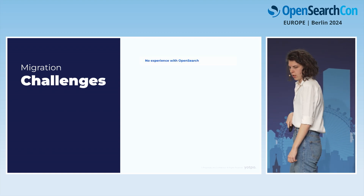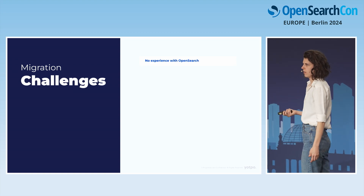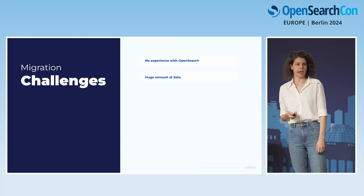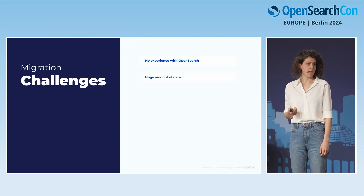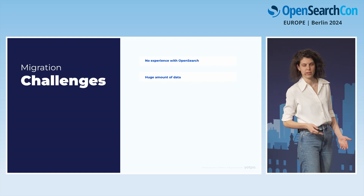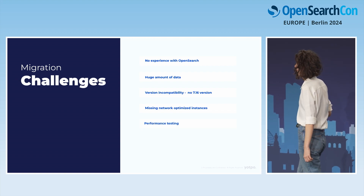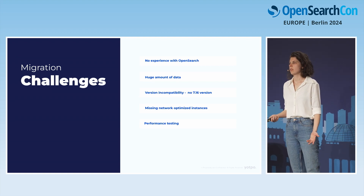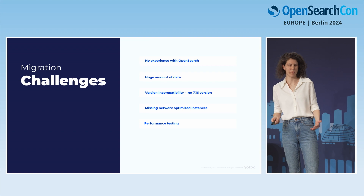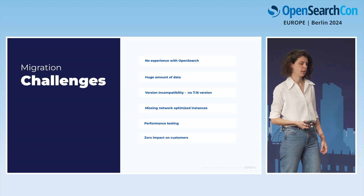Our challenges were: we weren't familiar with OpenSearch and had no experience with it. We had a huge amount of data — 50 terabytes. We had version incompatibility: OpenSearch is forked from 7.10 and we were running 7.16, so we had no direct version to move to. Amazon OpenSearch doesn't support network-optimized instances. We needed to run performance tests at such huge scales. And of course, we had to ensure zero impact on customers: zero downtime and fresh data throughout.